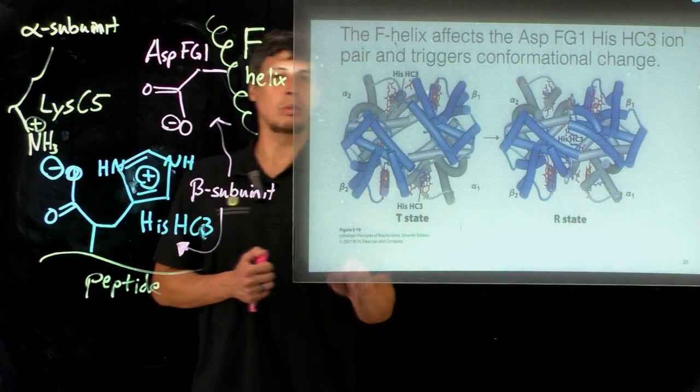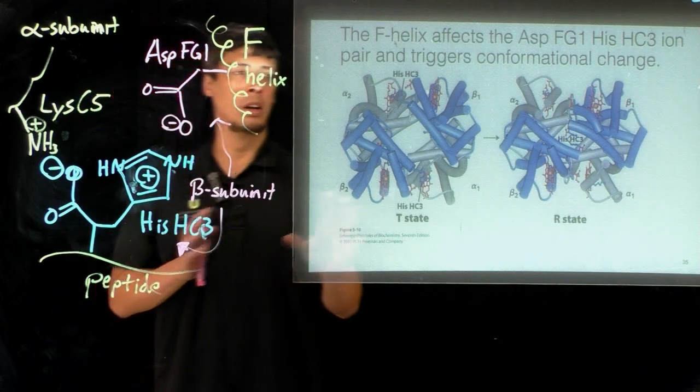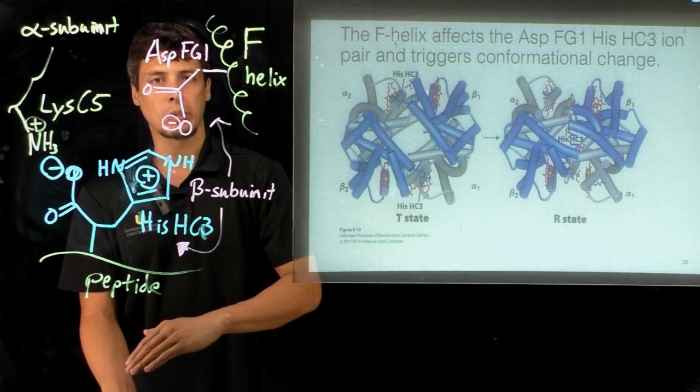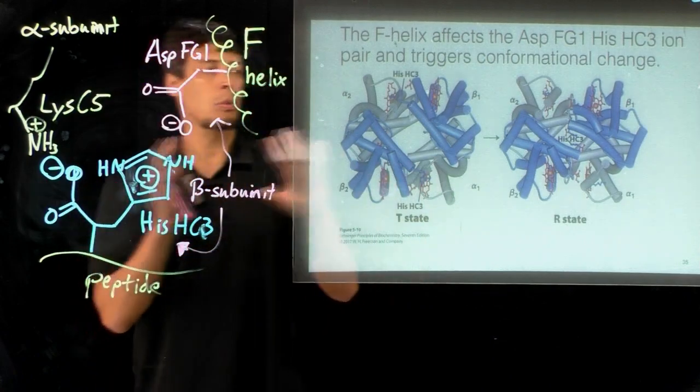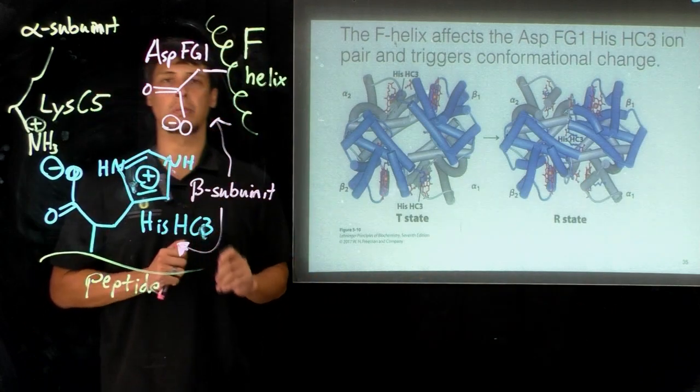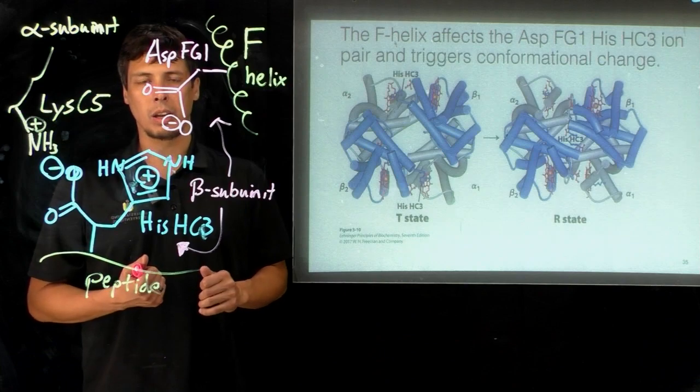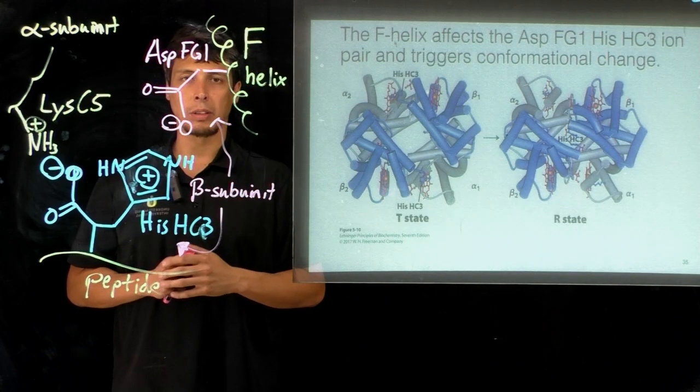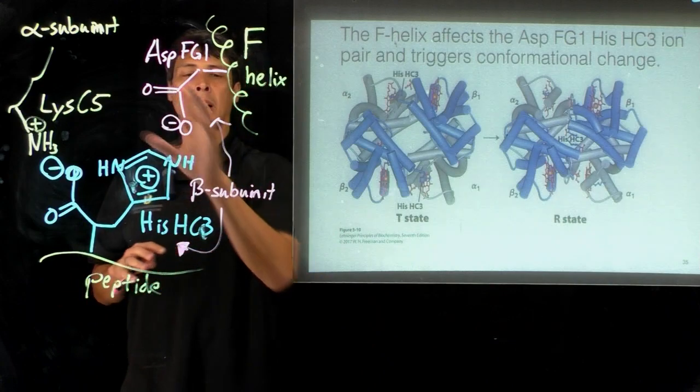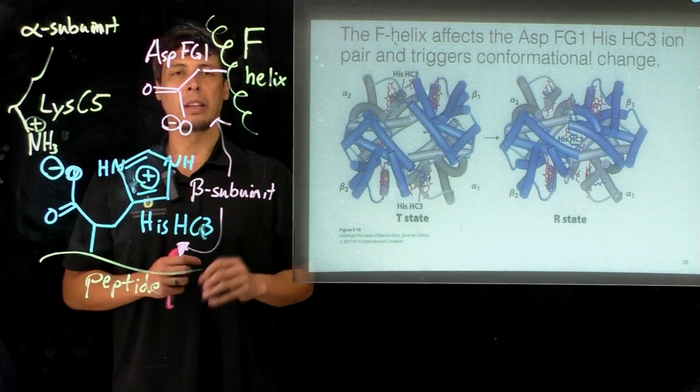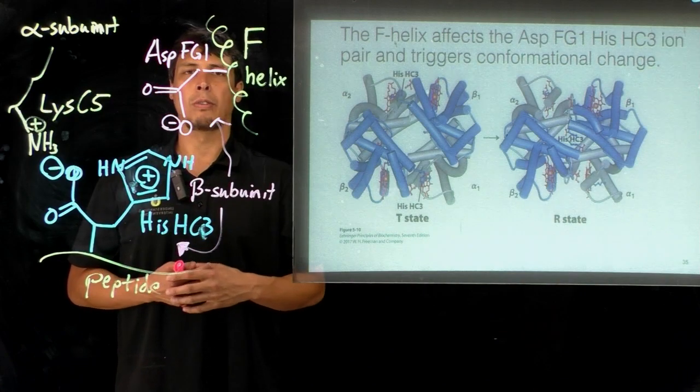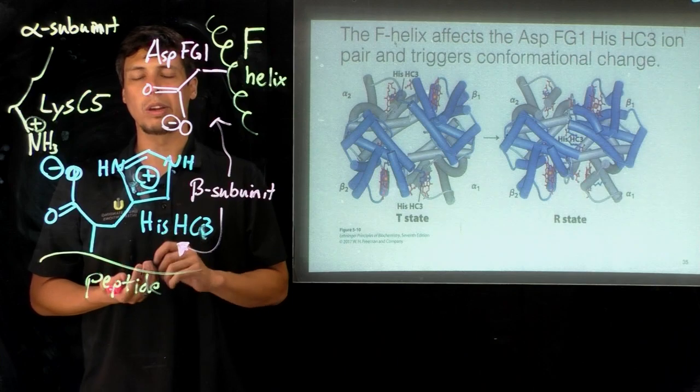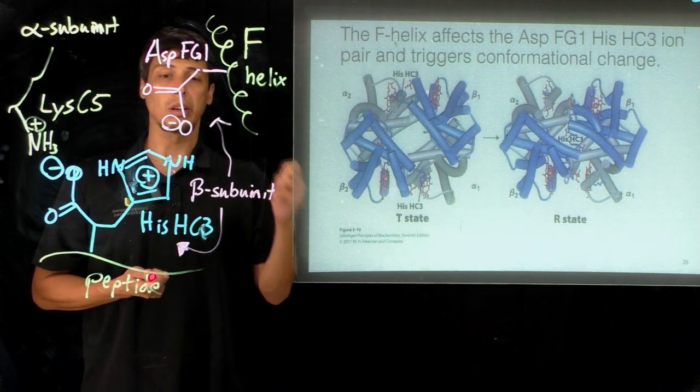When that disappears, you have a tendency to shift the equilibrium from the tense state—where all of this stabilizes the T state—to promoting formation of the relaxed state instead. Remember, the relaxed state is really important because it has a higher affinity for oxygen. Shifting this equilibrium of the protein towards the R state after binding of one molecule of oxygen helps promote more binding of oxygen at the other subunits in the hemoglobin. This is what accounts for this cooperative behavior that we see, where as we bind one oxygen, we increase our chances of binding two, three, and four oxygens.